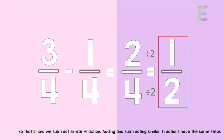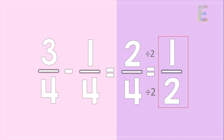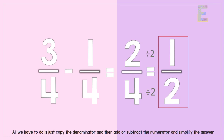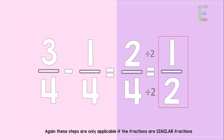That's how we subtract similar fractions. Adding and subtracting similar fractions have the same steps — all we have to do is copy the denominator, then add or subtract the numerators, and simplify the answer. Again, these steps are only applicable if the fractions are similar fractions.